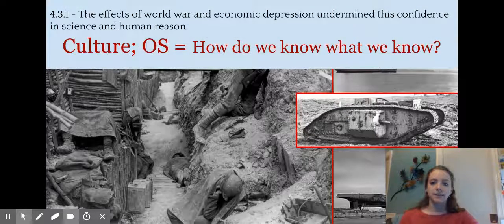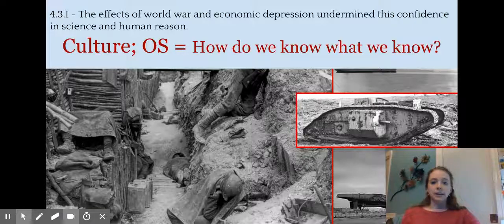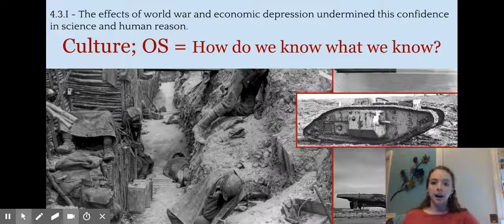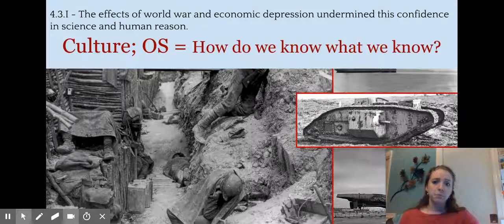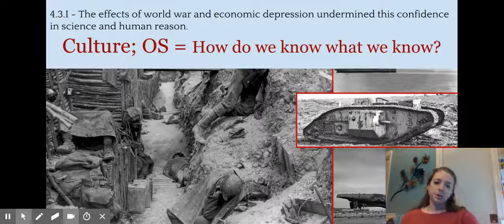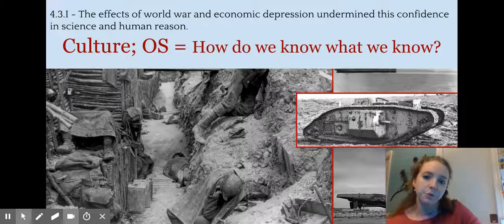AP talks about this in Key Concept 4.3, focusing on the undermined confidence in human science and reason. We see it starting in World War I. The economic depression further undermines it — here's a man-made institution, the economy, something men thought they could manage and figure out, and now it's not even working. They start to wonder: how do we know what we know, and how do we know if anything really exists accurately?